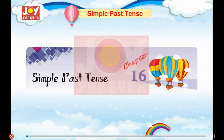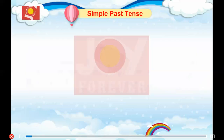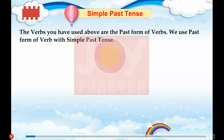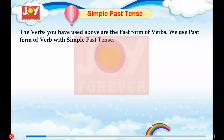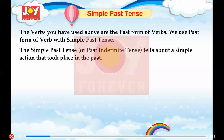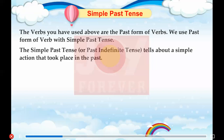Chapter 16: Simple Past Tense. The verbs you have used above are the past form of verbs. We use the past form of the verb with simple past tense. The simple past tense, or past indefinite tense, tells about a simple action that took place in the past.